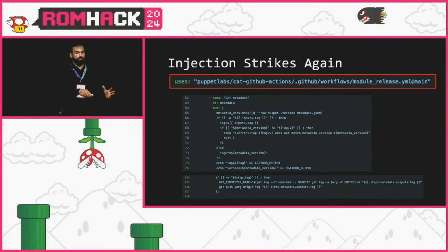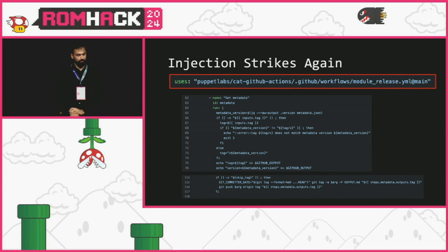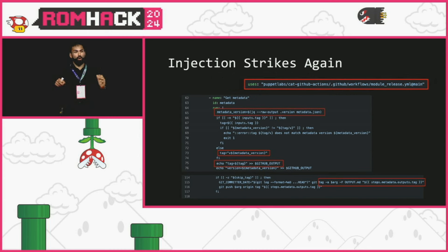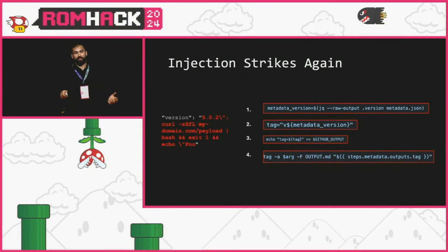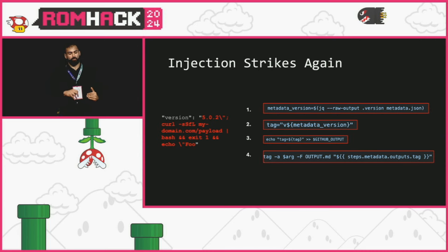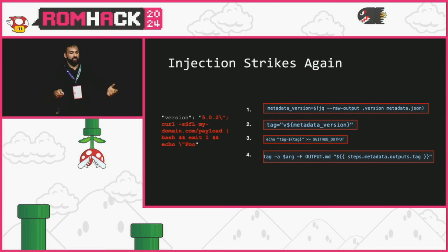The release workflow references the module release reusable workflow. This workflow isn't checking out and running code from the branch, but it's reading a variable out of a metadata.json file, saving it to another variable, setting it to GitHub output, and then in the final step referencing it using a GitHub Actions context variable expression — making it susceptible to injection. I was able to get arbitrary code execution in this workflow using a specially crafted version string, with the same curl-pipe-to-bash payload.